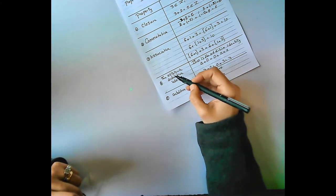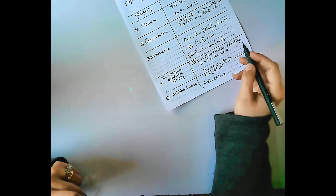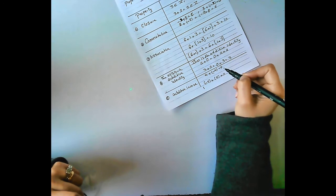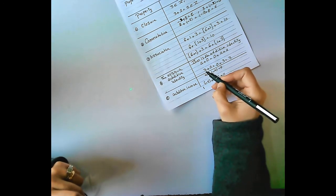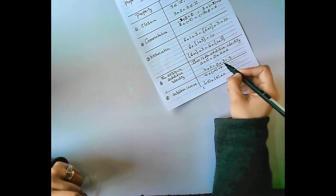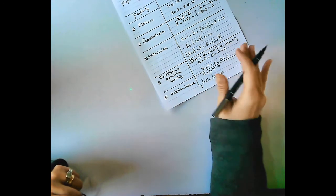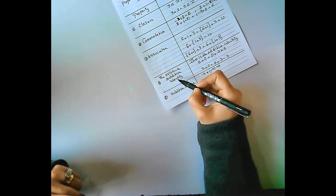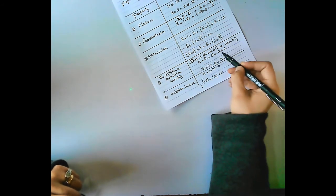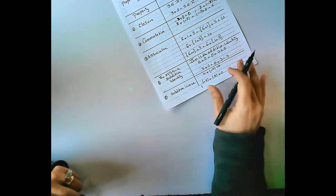Number 4: Additive identity. Zero is the additive identity. Why? Because a plus 0 equals 0 plus a equals a. For example, 3 plus 0 equals 0 plus 3 equals 3. Additive identity means any number plus 0 equals the same number. So 0 is the additive identity.